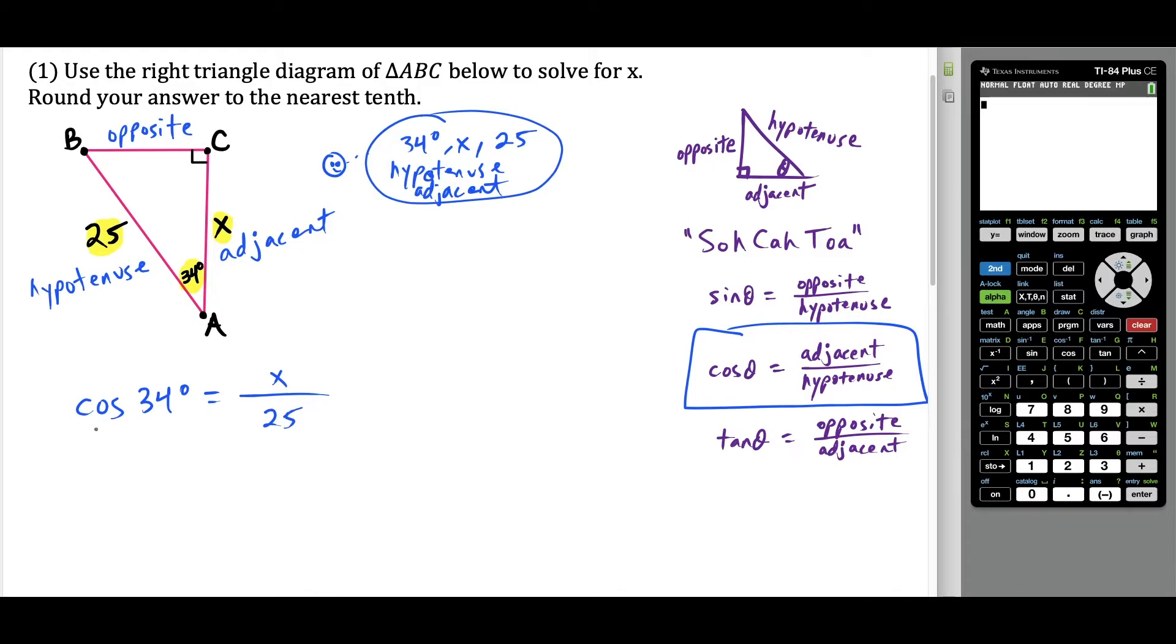So then all we have to do here is just solve for x. So we could cross multiply, we have x times one is x, and this is going to equal 25 cosine of 34 degrees. So when they tell us to solve for x and we're rounding to the nearest tenth, now we just have to punch this in a calculator. But please be careful, notice this angle was given in degrees. So just make sure the calculator is in degree mode here, make sure you're not in radians.